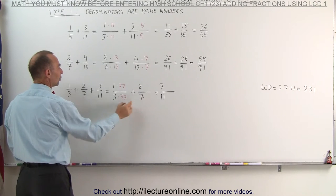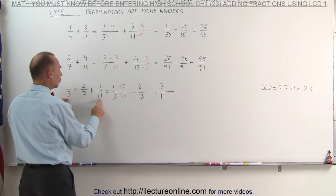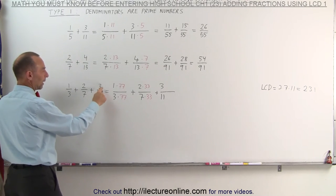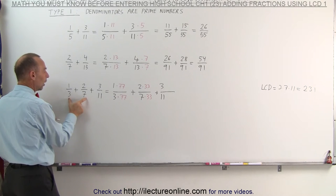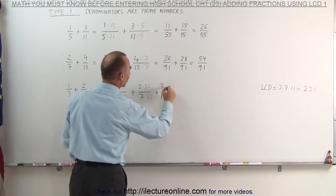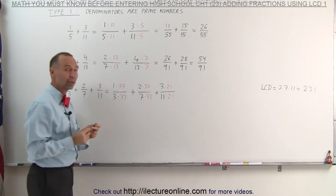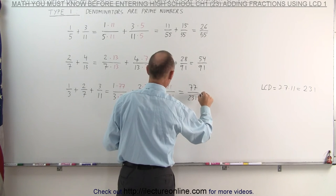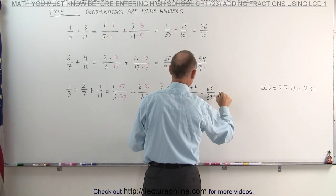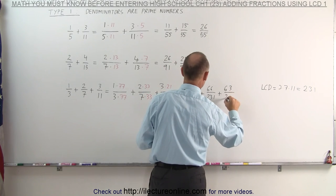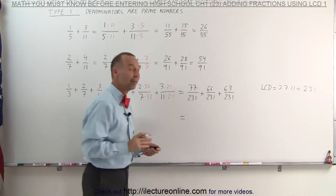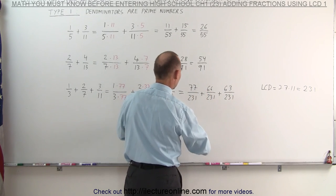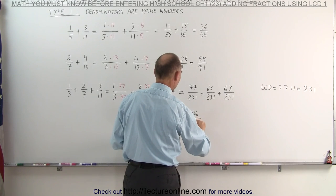On the second fraction, we're going to multiply the numerator and the denominator with the product of the other two denominators, which is 3 times 11, which is 33. And finally, the third fraction, we're going to multiply both the numerator and the denominator with the product of the two other denominators, 3 times 7, which is 21. The three fractions now become 77 over 231 plus 66 over 231 plus 63 over 231. Now that they all have the same denominator, we can simply add the numerators: 77 plus 66 is 143, plus 63 is 206, divided by 231.